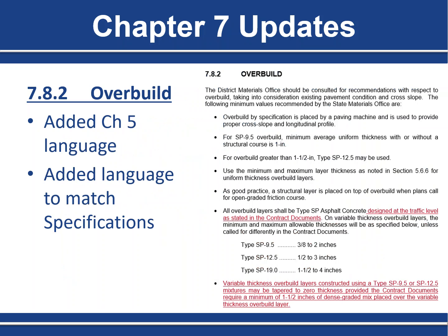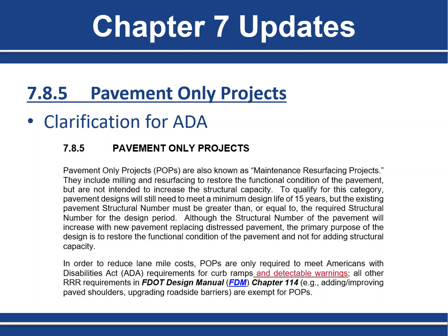In Section 7.8.2, the Overbuild section, we added language from the Chapter 5 overbuild section that was missing here, and also added language to match the standard specifications. The final update in the Flexible Payment Design Manual is a clarification in the Payment Only Projects section: we now state that Payment Only Projects must meet ADA requirements for both curb ramps and detectable warnings. This covers cases such as a flush shoulder roadway with pedestrian facilities where there is no curb ramp but detectable warnings are still required.